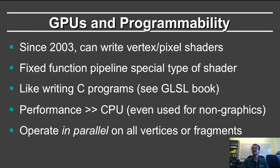Since 2003, we can write vertex and pixel shaders, and essentially the fixed-function pipeline from earlier is a special type of shader. This is much like writing C programs—we'll be showing examples in this course, and you can also read up on the orange book. The performance is much higher than CPU, even for non-graphics applications. This has spawned the notion of GPGPU—general purpose graphics programming unit—where you use the parallel nature of operating on streams of vertices or pixels to develop a stream programming approach to many problems unrelated to graphics. That parallelism is very important and is influencing parallelism in modern CPU architectures.